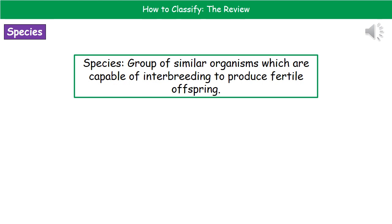This question comes up on your exam paper and normally you're going to get two marks for it. When we're talking about a species, we're talking about a group of similar organisms which are capable of interbreeding — that's your first mark — and the second mark is for saying that they produce fertile offspring. Remember that definition: one mark for interbreeding, one mark for fertile offspring.